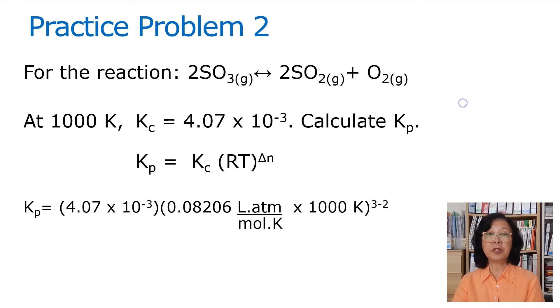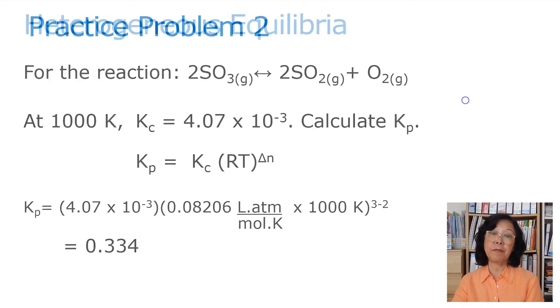Using the equation, we can plug in the Kc value and the R value and the temperature value. Notice that the delta N is three moles of product minus two moles of reactant. So now we calculate it to be 0.334.